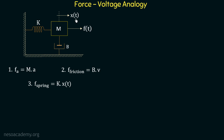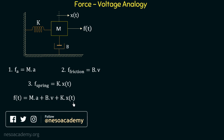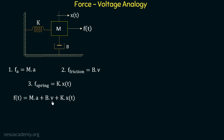Now if we apply Newton's law of motion, we can say that the sum of all the forces acting on this system will be equal to zero, or the sum of all the applied forces is equal to the sum of all the opposing forces. So we can write: f = m·a + b·v + k·x(t). Since acceleration is the double derivative of displacement with respect to time, and velocity is the derivative of displacement with respect to time, we can rewrite this equation as: f(t) = m·(d²x(t)/dt²) + b·(dx/dt) + k·x(t).